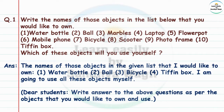Answer: The names of those objects in the given list that I would like to own are water bottle, ball, bicycle, and tiffin box. I am going to use all these objects myself. Dear students, write the answer to the above questions as per the objects that you would like to own and use.